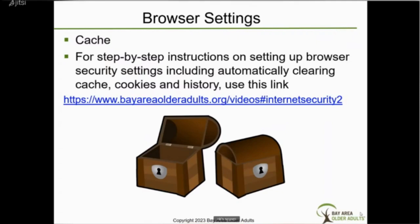Once you set it up, you need to practice the associated behavior: when you finish one thing on the browser — like checking your bank account and logging out — close the browser before moving on to the next activity like logging into email. Setting your browser to automatically clear cache, cookies, and history only works if you actually close your browser between each activity. The link also covers how to set up all the security settings in both Mozilla Firefox and Google Chrome — not just clearing history, but all available security settings.